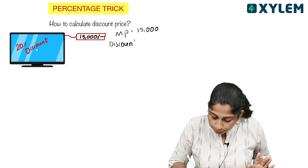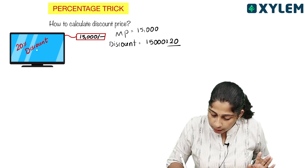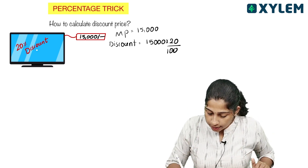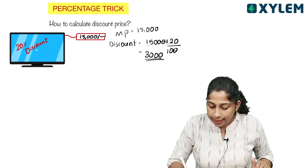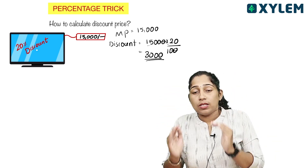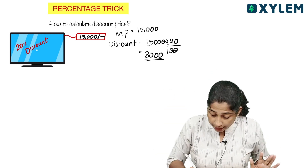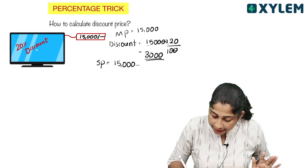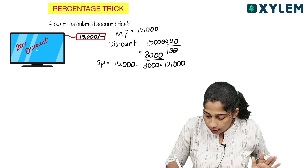The discounted amount is equal to 15,000 × 20%. 15 × 2 is 30, with two zeros, so the discount is 3,000. Therefore the selling price is 15,000 minus 3,000, which is equal to 12,000.